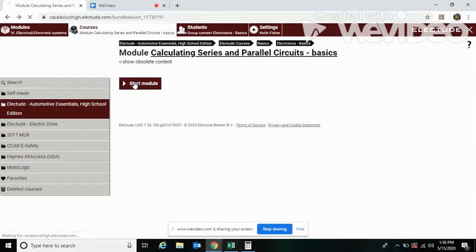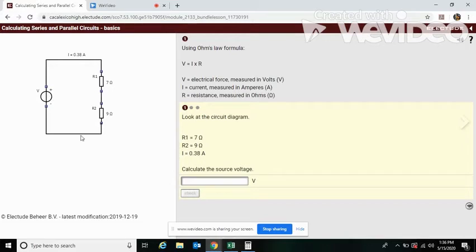We're going to start the module. Here you see a series circuit. We have our volts coming from the battery, our total current or amperes, and resistance. These two are in series, seven and nine ohms. Now if you look over here it says look at the circuit diagram: R1 is seven ohms, R2 is nine ohms, and the current I is 0.38 amperes.